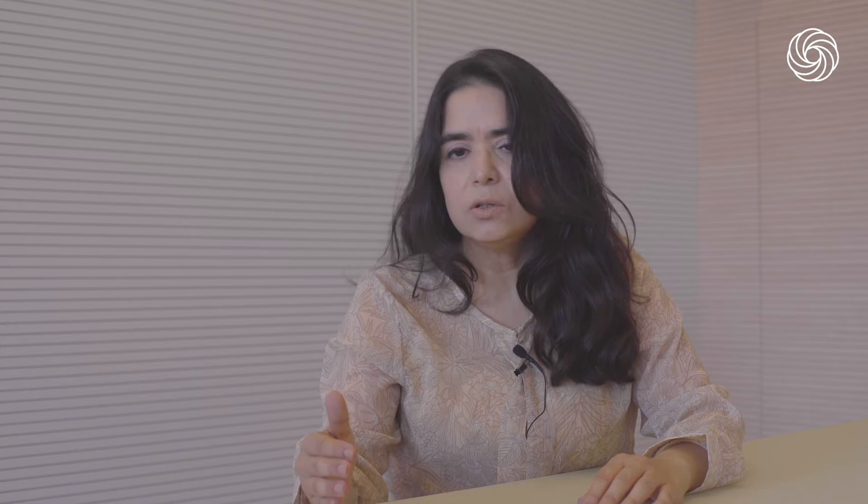They continued with their meetings every year, advancing international law in many areas that had to do with human mobility, and with the recognition of women's rights or women's situation vis-à-vis civil law. And in 1928, they created the Inter-American Commission on Women, the first institution of its kind that is still working today.